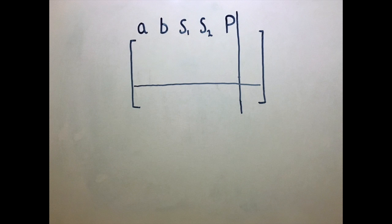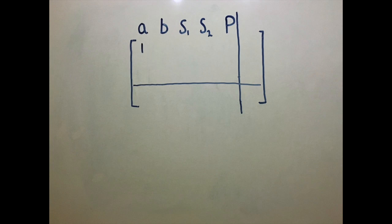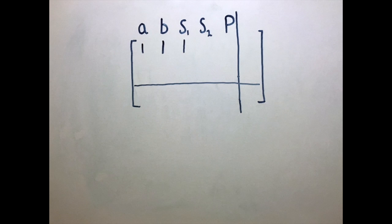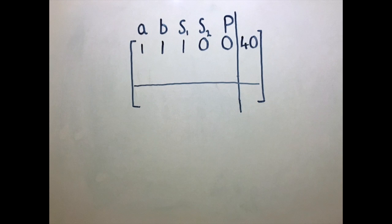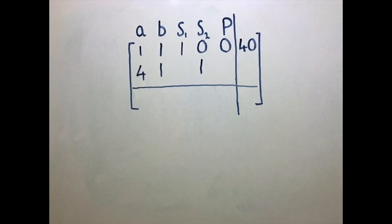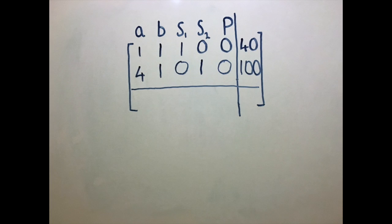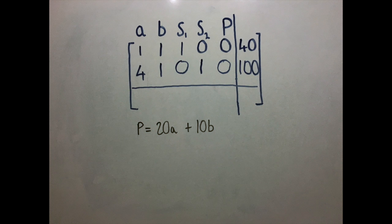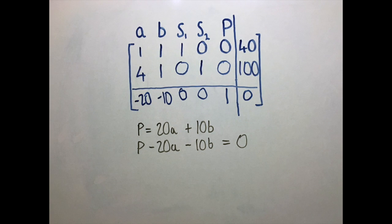From our first constraint, we have 1A + 1B + 1S1 = 40. From our second constraint, we have 4A + 1B + 1S2 = 100. We can rearrange our objective function from this to this, and then fill the values in the last row.